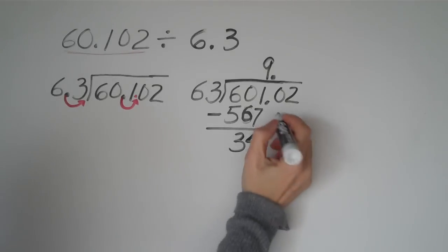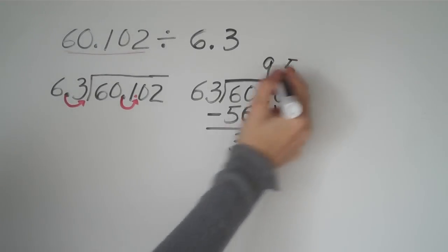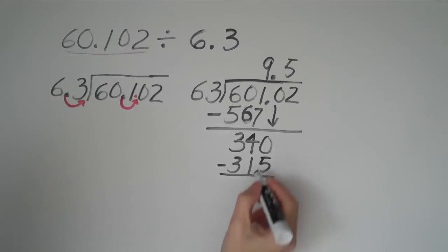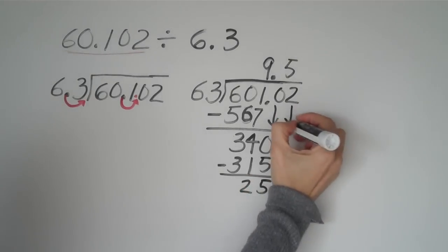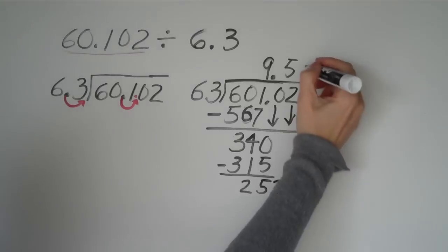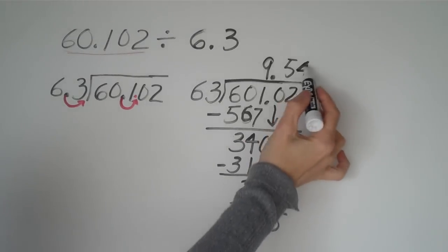And then we're going to bring down this number right here. We have 340. And then 63 into 340 goes about five times. So I'm going to put a five up there. And five times 63 is 315. Then we do our subtraction again. And when we subtract, we get a 25. And then we bring down our next number, and we get 252, which is beautiful because four times 63 is exactly 252. We do the subtraction, and we have no remainder. So our final answer there is 9.54.